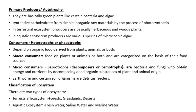Micro consumers are also known as saprotrophs, decomposers, or osmotrophs, which are basically bacteria and fungi. They obtain energy and nutrients by decomposing dead organic substances of plant and animal origin. Earthworm and certain soil organisms are detritus feeders.